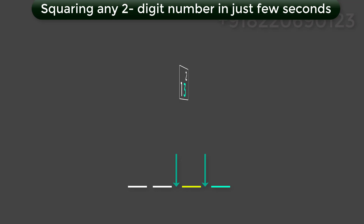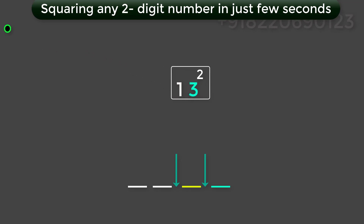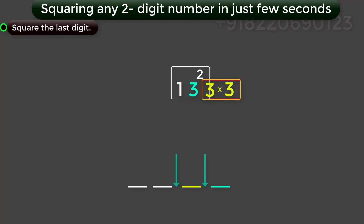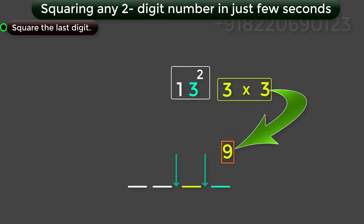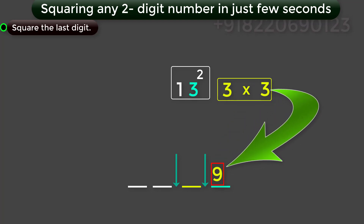Let us take an example: 13 squared. Step 1 — square the last digit. Square the last digit 3, you will get 9. This 9 becomes the last part of the answer.